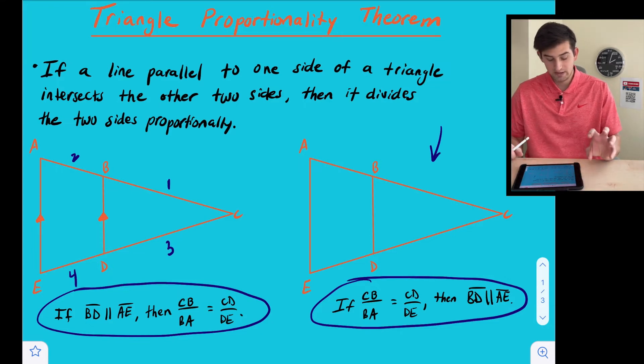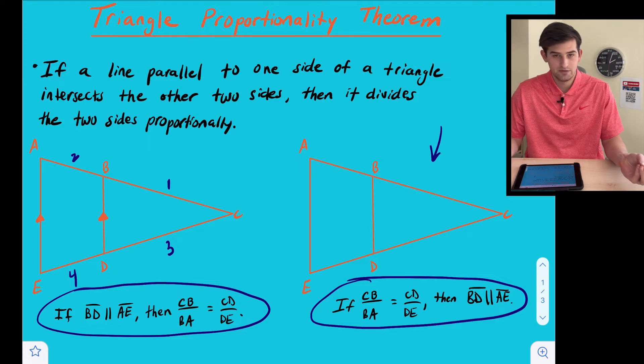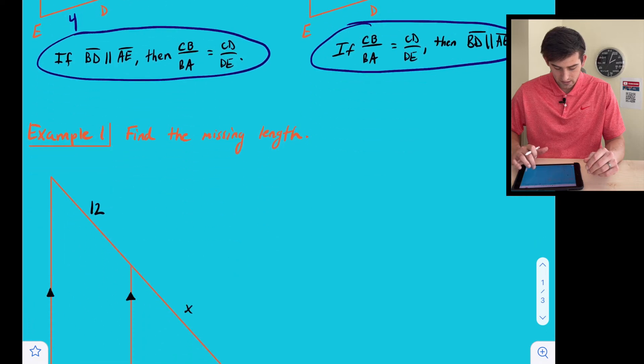So kind of like the converse of what we see on the left side, right? We just switch the if and the then part. So now it says if we know that the sides are proportional, then that tells us that the segment is parallel to the end of the triangle. All right, so let's look at a couple examples.